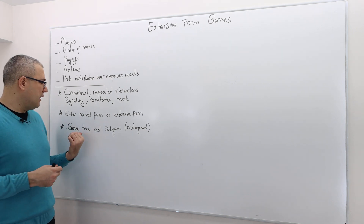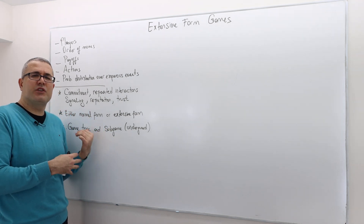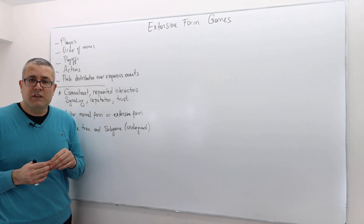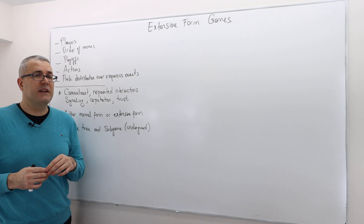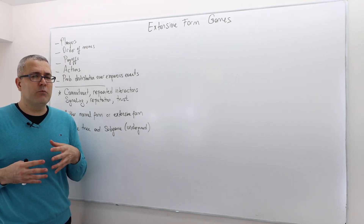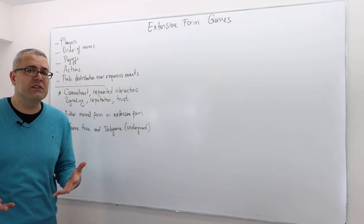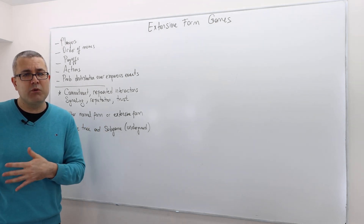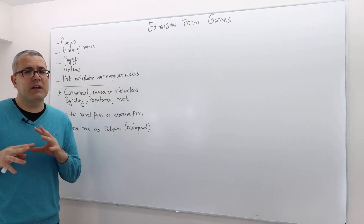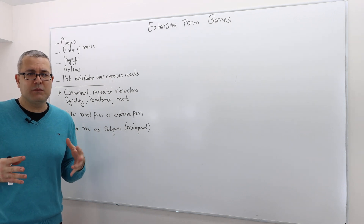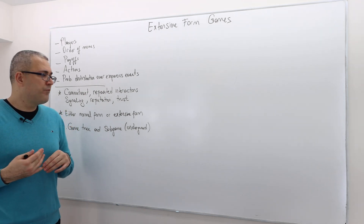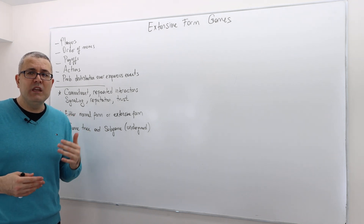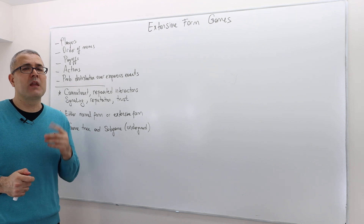What we are going to do in this episode and the next few episodes is define extensive form games in a more formal and detailed way. The concept of game tree, the sub-game definition coming from game trees, and the ability of drawing a game tree — these are very intuitive things to approach an extensive form game. But the problem is that when the game gets a bit more complicated — like players have infinitely many strategies, or several players are moving simultaneously and there is also some sequentiality — drawing a game tree becomes almost impossible. For example, in repeated games, you won't be able to visualize the sub-game. So we need a more detailed, formal description.